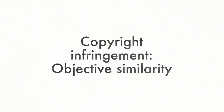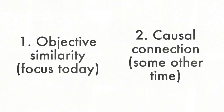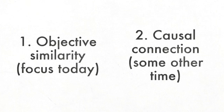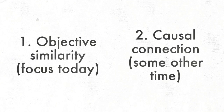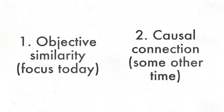Hi there. This video looks at the issue of objective similarity within the context of copyright infringement. Objective similarity is one of two elements to be proved to establish that a literary, dramatic, musical or artistic work has been reproduced in a material form, which is of course an infringement of the copyright in that work under the Copyright Act.